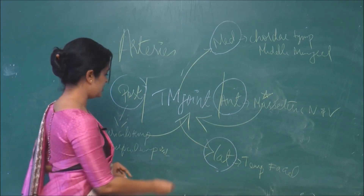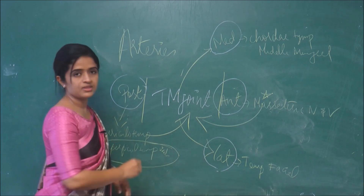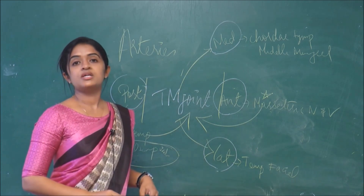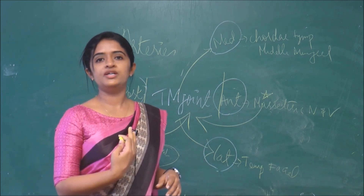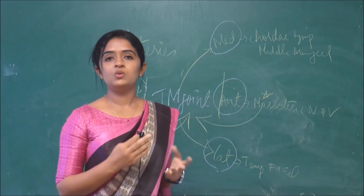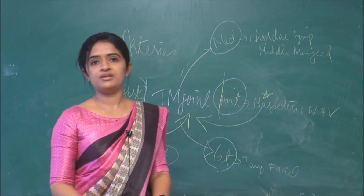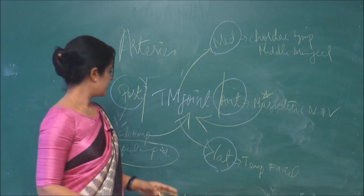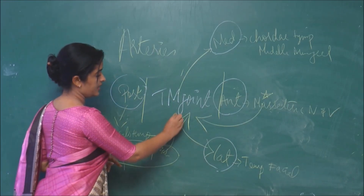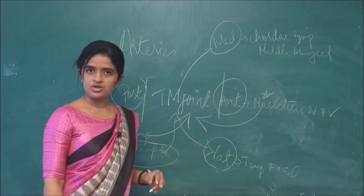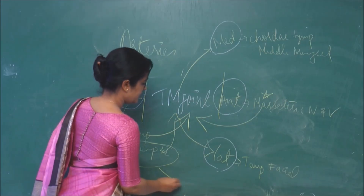We have already mentioned the superficial temporal vessels. The external carotid artery, when it enters the parotid gland, divides into the superficial temporal and maxillary artery. So the superficial temporal artery will be going and supplying the temporomandibular joint, as will the maxillary artery.